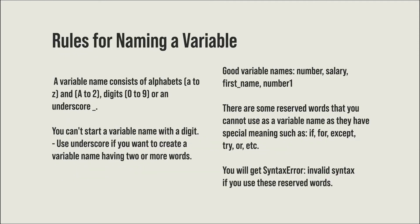There are certain rules for naming a variable. You can write a variable name with uppercase and lowercase letters, digits from 0 to 9, and you can use underscores. However, you cannot start a variable name with a digit. Use underscore to differentiate between two words, and make sure you use a meaningful variable name. Also, avoid reserved words called keywords — like 'if', 'else', 'except' — as using them will throw an error.